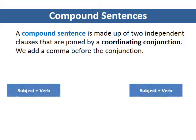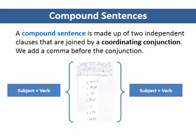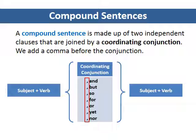Compound sentences. A compound sentence is made up of two independent clauses that are joined by a coordinating conjunction. We add a comma before the conjunction. English has seven coordinating conjunctions. They are: and, but, so, for, or, yet, and nor.